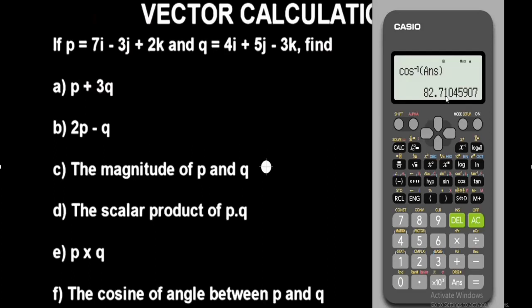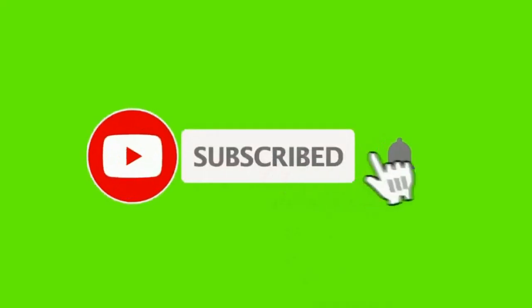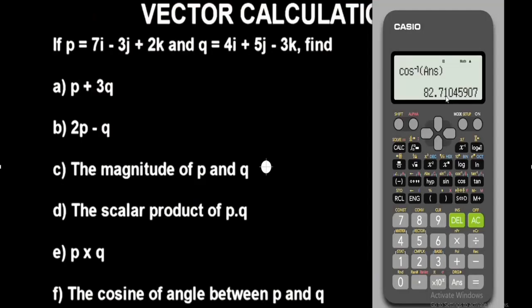So this is basically how you can solve problems involving vectors using the Casio fx-991ES Plus second edition scientific calculator — fast and easy from multiple choice questions. Hope you found something interesting from this video. If you are new to this channel, hit the subscribe button for more videos, and do like, share and comment. If you have any specific questions regarding what was covered in this video, feel free to leave them in the comment section below and I'll be sure to give a response. Click on the end screen and I will see you in my next video. Thanks for watching!